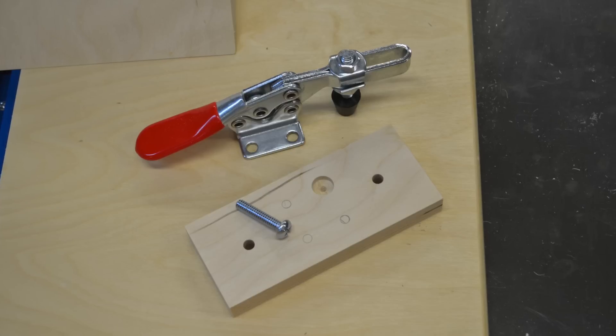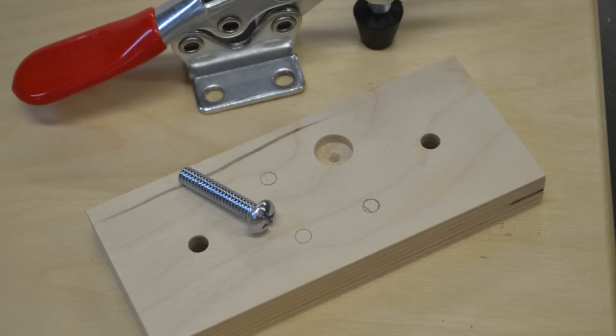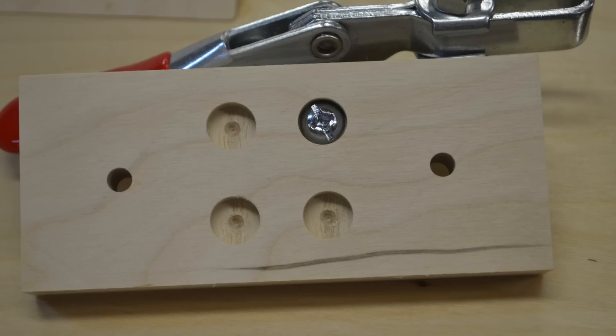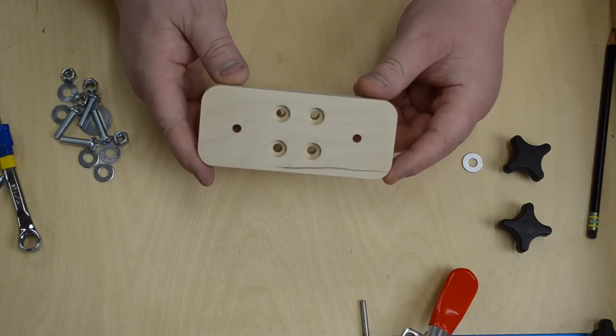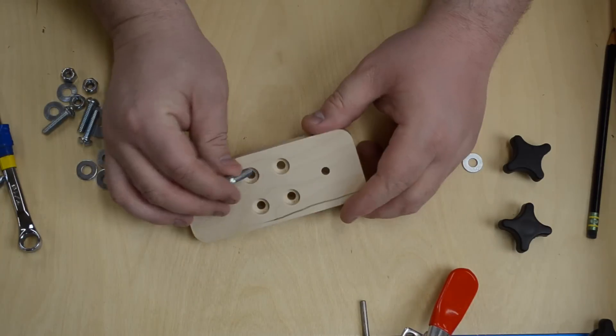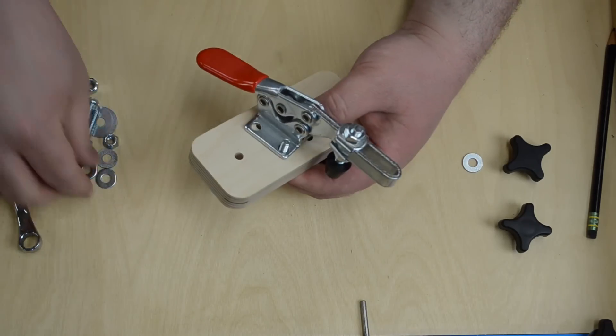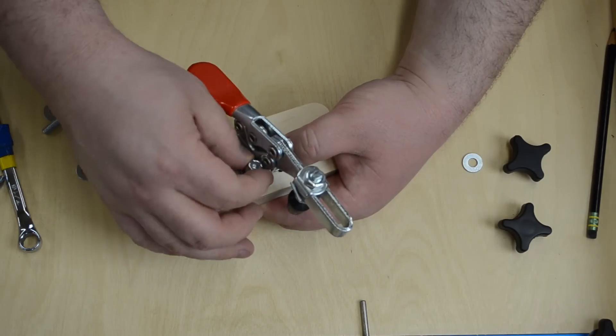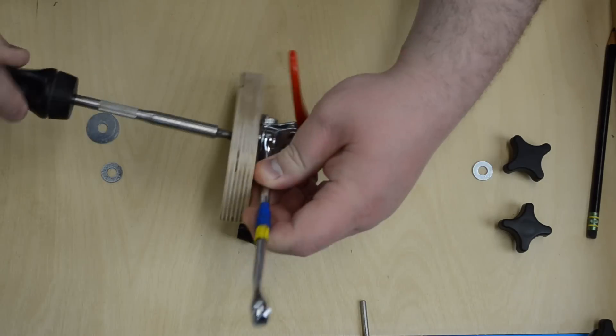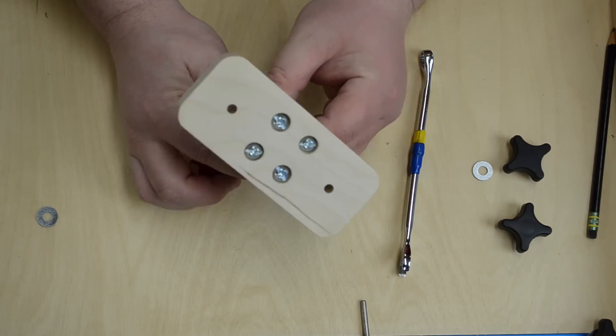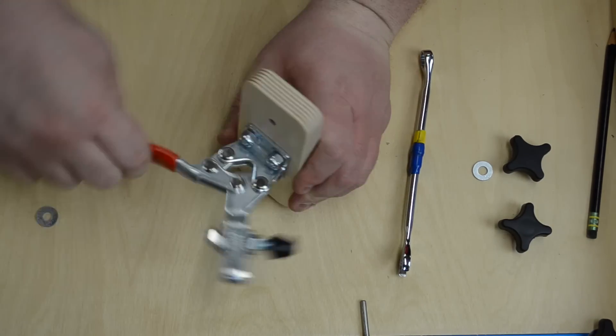For the tenoning jig portion to have a hold down, I was going to use a toggle clamp. For that I had a small piece of wood that I drilled four holes to attach the toggle clamp. I counter-bored those holes to make sure that the hardware sat below the surface, and then two additional holes to line up with the adjustment slots on the jig. I ended up rounding the corners over as well. Then just with a couple washers and some lock nuts, attach the toggle clamp to the piece of wood.